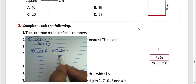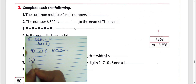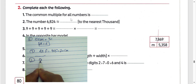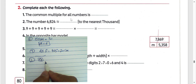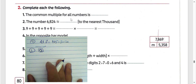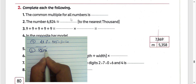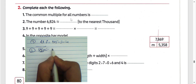Now we will solve equation number 1 here: the common multiple for all numbers. Zero can be divided by all numbers, so the common multiple for all numbers is 0. But if we ask about the common factor of all numbers, we write 1. The common multiple for all numbers is 0. Write 0 in the space.